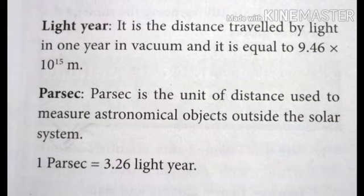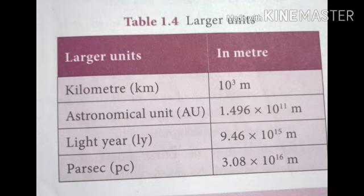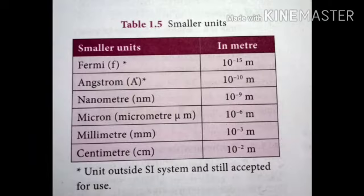One parsec is equal to 3.26 light years. The larger and smaller units of length are also listed in our tabular column, including kilometer, astronomical unit, parsec, fermi, angstrom, nanometer, micron, millimeter, and centimeter.